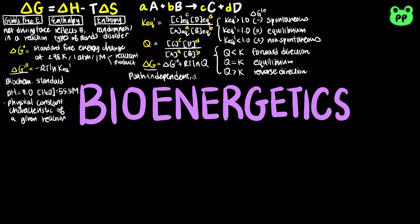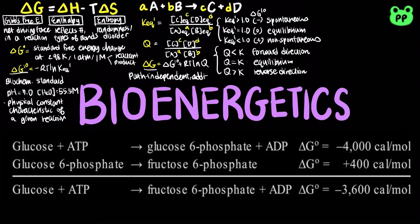The delta G values of sequential chemical reactions are also additive. The net chemical reaction that results from successive reactions sharing a common intermediate has an overall free energy change that is the sum of the delta G values of the individual reactions.